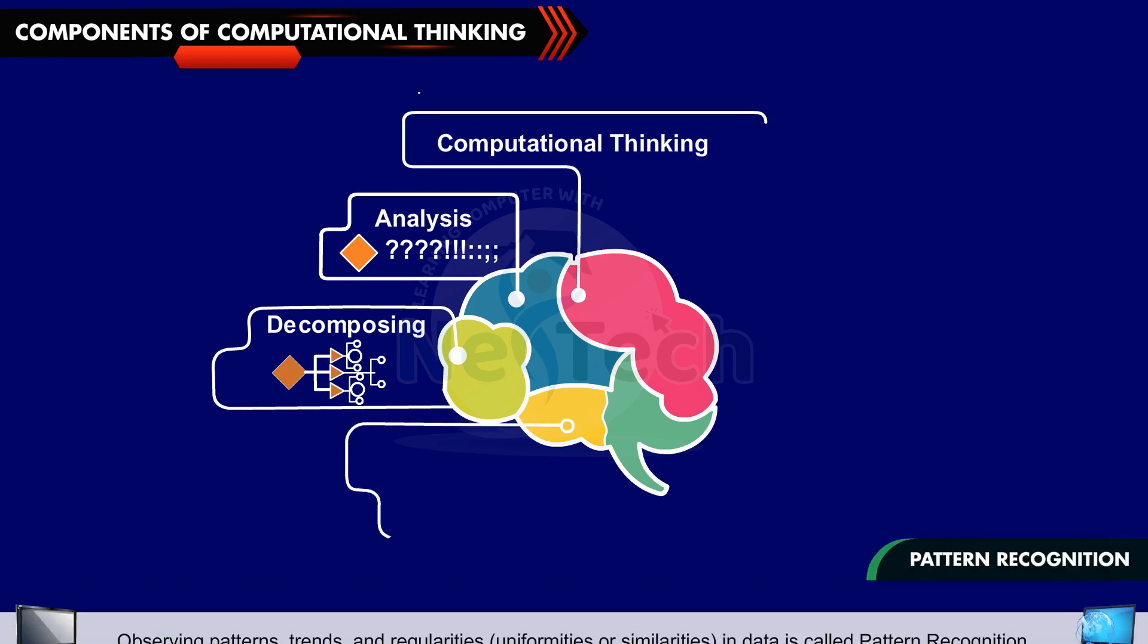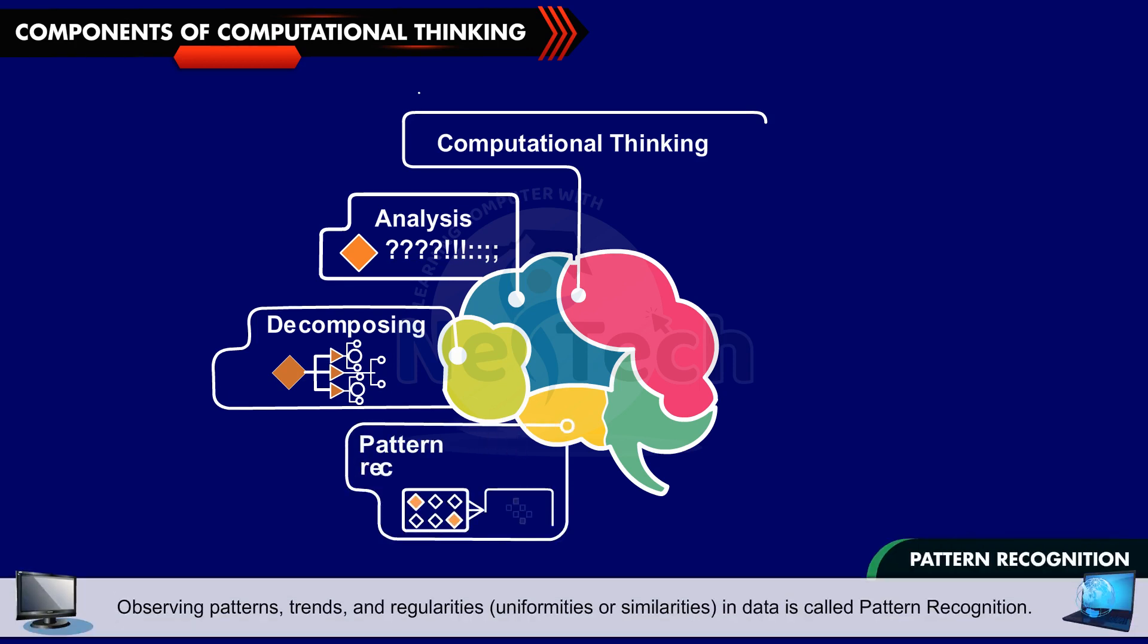Pattern Recognition: Observing patterns, trends and regularities, uniformities or similarities in data is called Pattern Recognition. When the patterns are recognized, it becomes easier to make predictions and create rules to solve other problems.